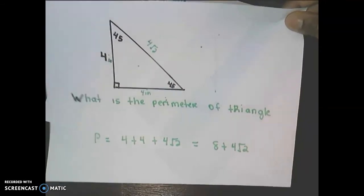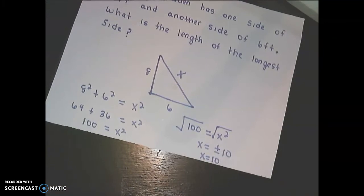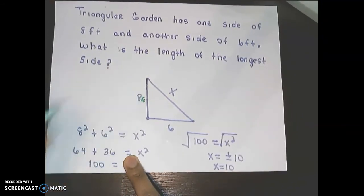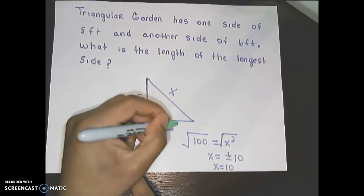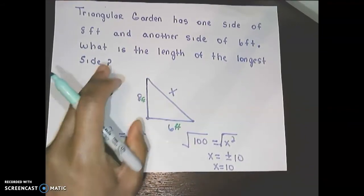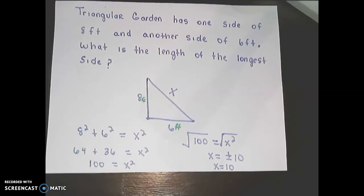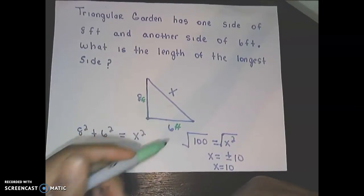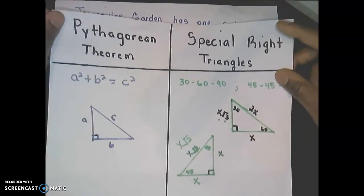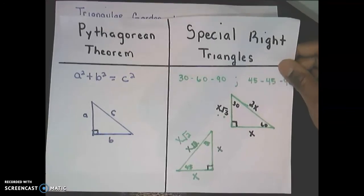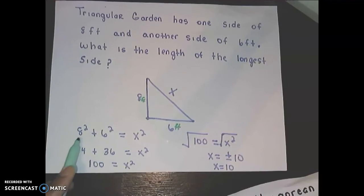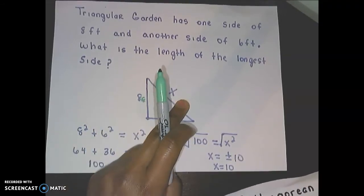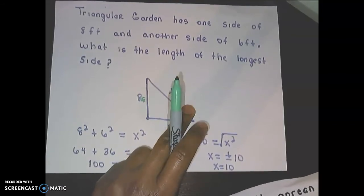The last example involves a triangular garden. One side is 8 feet and another side is 6 feet; we want the length of the longest side. We don't know the angles, so we don't know if it's a special right triangle. We'll use the Pythagorean theorem: a squared plus b squared equals c squared. Here a is 8, b is 6, and the longest side c is represented by X.